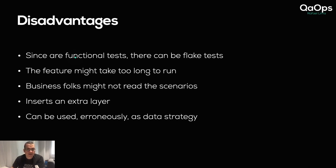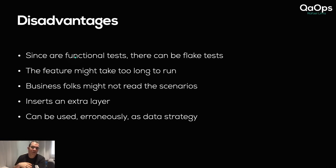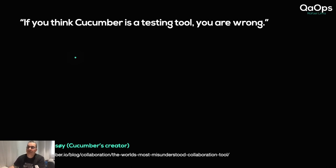BDD can also be used erroneously as a data strategy. With great power comes great responsibility — it's very easy to insert data through Cucumber using tables, lists, or maps. But sending data from Cucumber to the code makes it really hard to read the scenario and understand what it's doing. Long-term, maintaining that becomes extra hard because some tests might use the same data, leading to a lot of duplication.